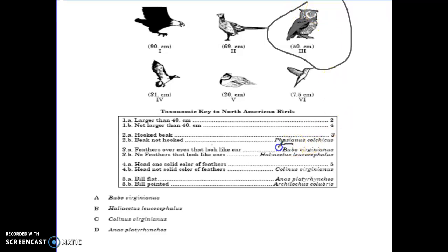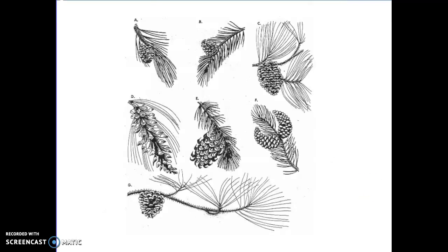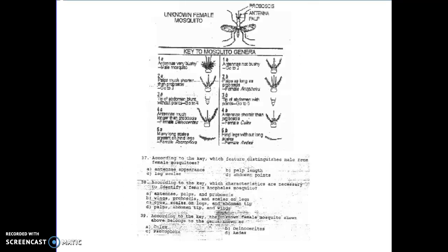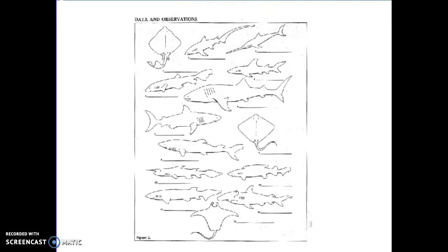So the scientific name of the owl is Bubo virginianus, which would be letter A. Remember, they give you that scientific name so you can't just say 'he's an owl' and skip using the chart. So there are some examples — you can do this with pine trees, you can do this with sharks based on their different features.